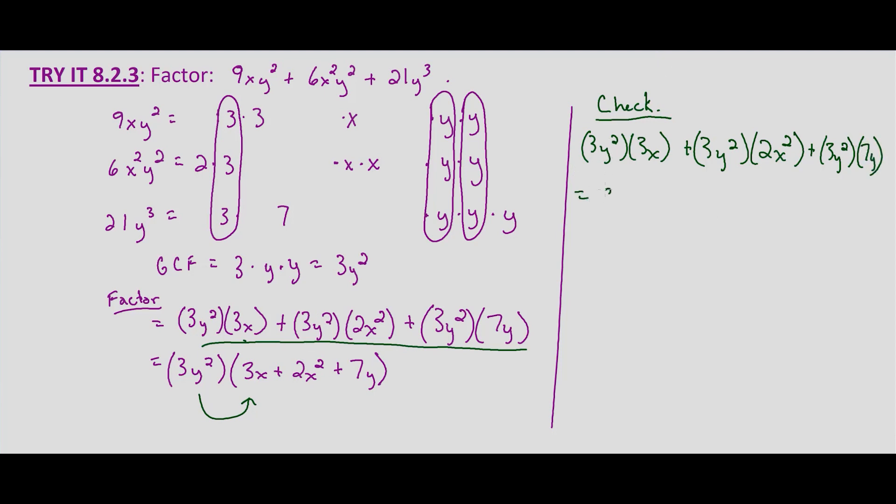And when we multiply those through, we get 9xy² plus 6x²y² plus 21y³. That happens to be our original polynomial. So our solution checks. And this is what we get for our factorization.